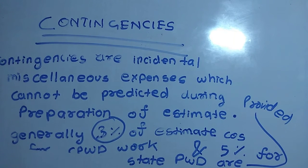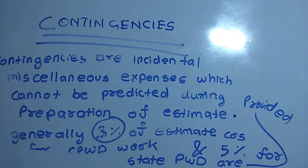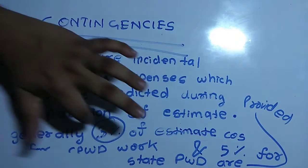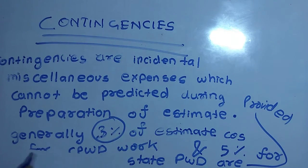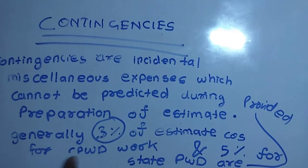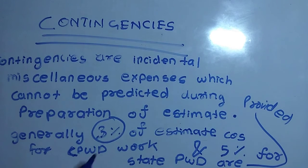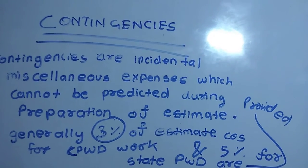So this is the definition of contingencies. 3% of the total estimate is for CPWD work, and 5% for State PWD work. This is Central and this is State. For Central it is 3% and for State it is 5%.